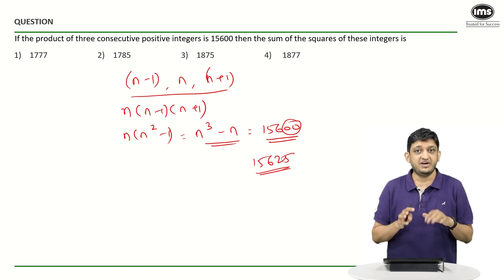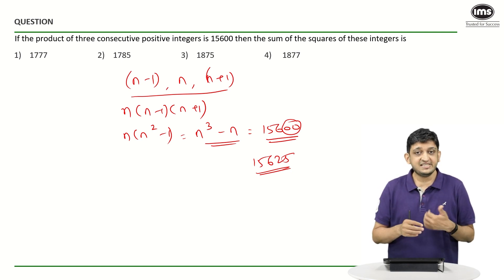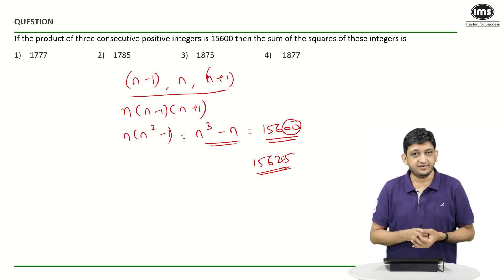Only if your product has a 25 in it will you be able to manufacture a 00 at the end of it. So what we do in this case is we basically say that n equals 25.